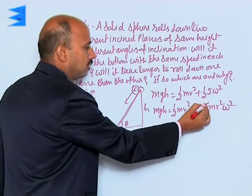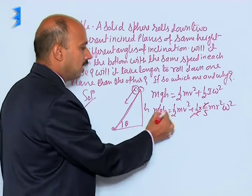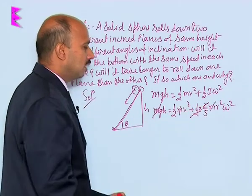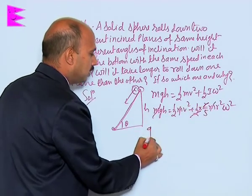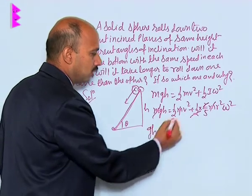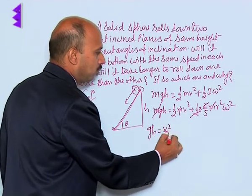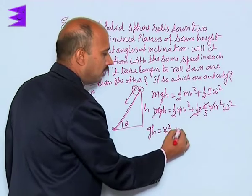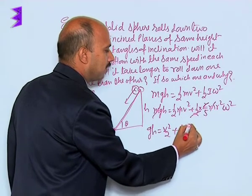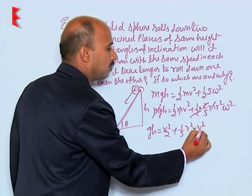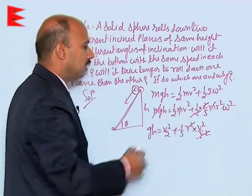So, this 2 and this 2 will get cancelled, this m and this m will get cancelled. We will be getting gh is equal to v²/2 plus 1/5 r² into v²/r², this and this also will get cancelled.